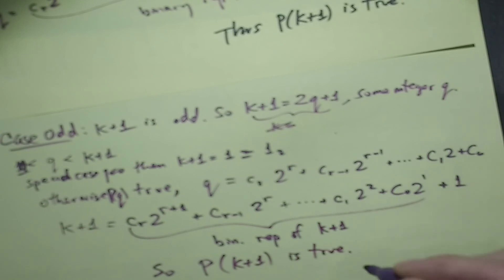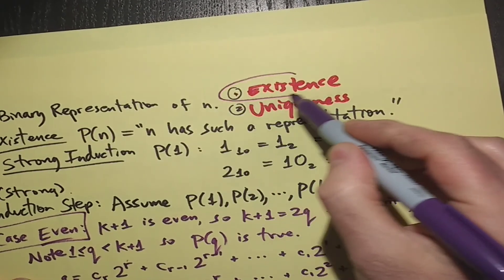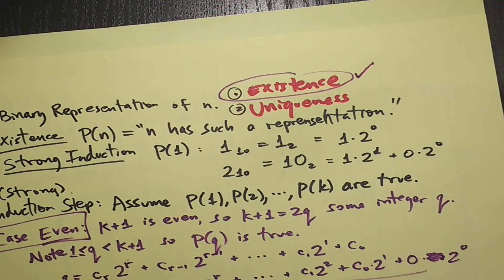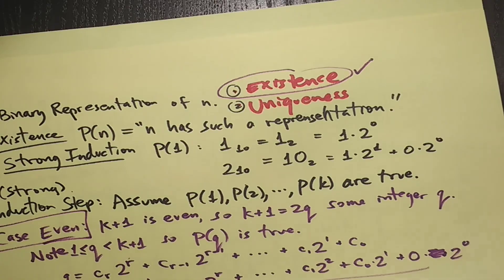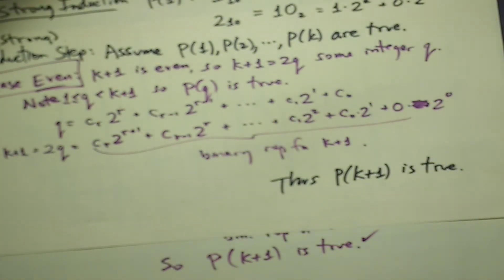And what we have there is really a strong induction argument that a binary representation does exist. But we want to go further and show that the binary representation is unique, that there's only one binary representation. Let's do that in another video.